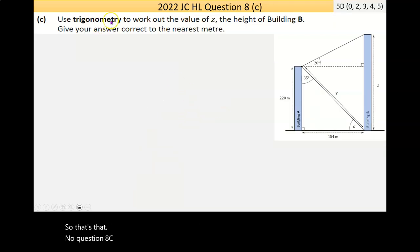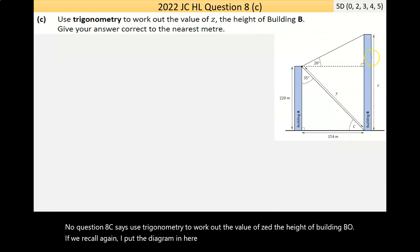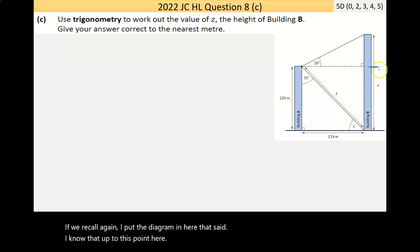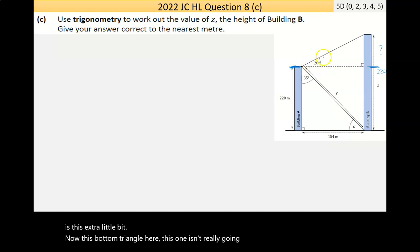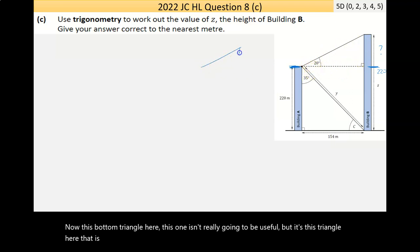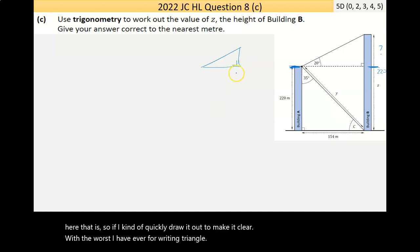Now, question 8c says, use trigonometry to work out the value of z, the height of building B. So, if we recall, again, I put the diagram in here. That's z. Now, I know that up to this point here, it's 220. Because I know there's 220 up to that height there. What I'm really looking for is this extra little bit. Now, this bottom triangle here, this one isn't really going to be useful, but it's this triangle here that is.